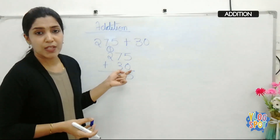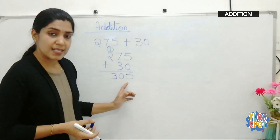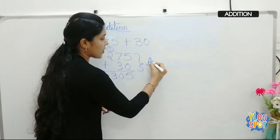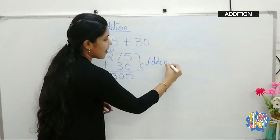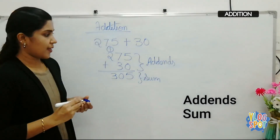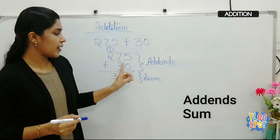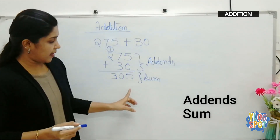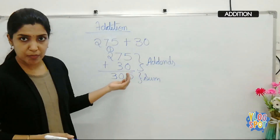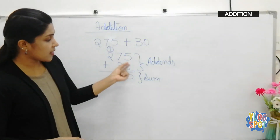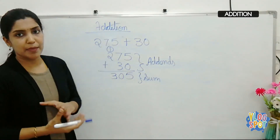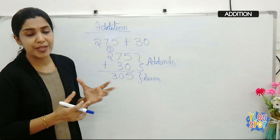One more thing: the numbers we are adding are called addends, and the result we get after addition is called the sum. So 275 and 30 are the addends, and the result 305 is the sum. Always start the calculation from the right side, keeping numbers aligned by place value.